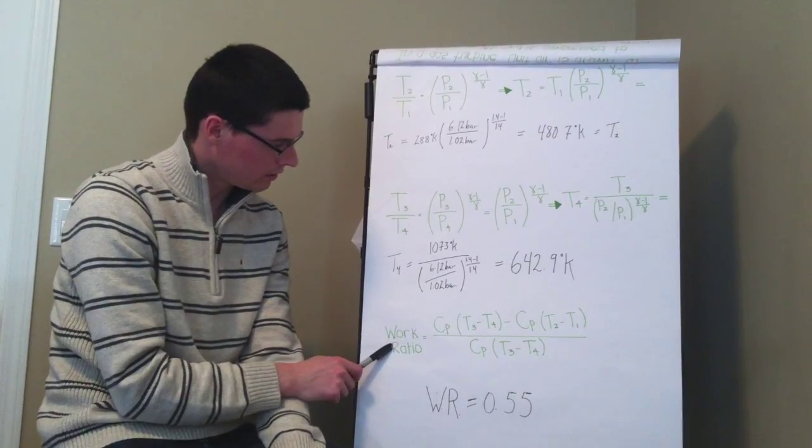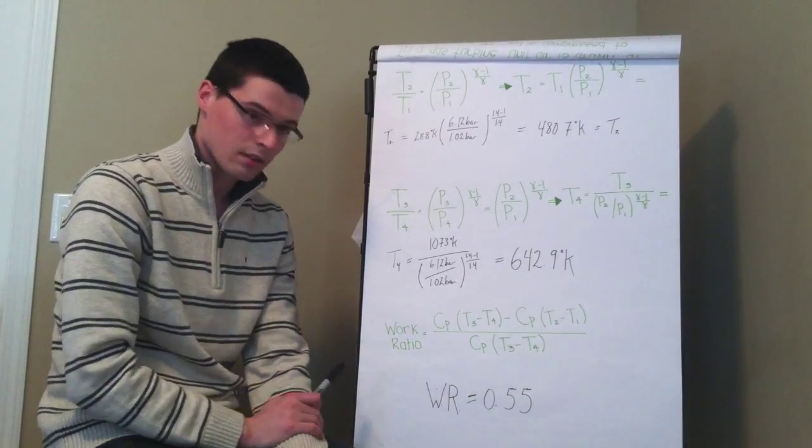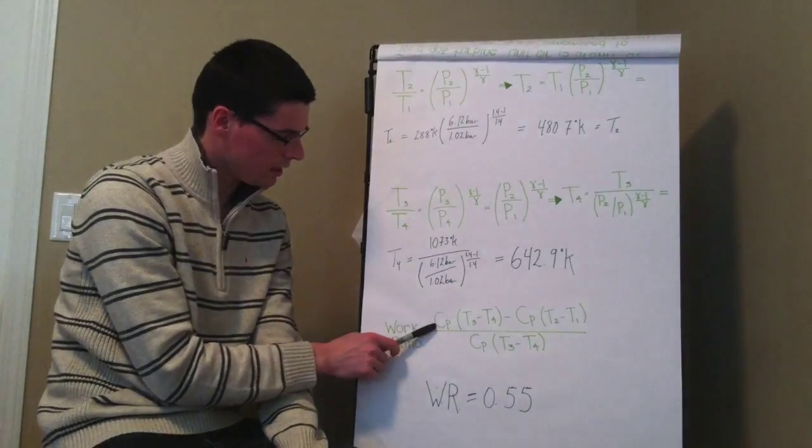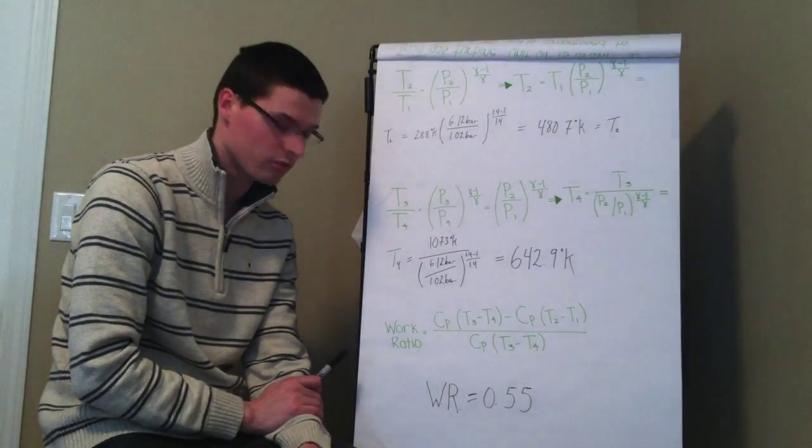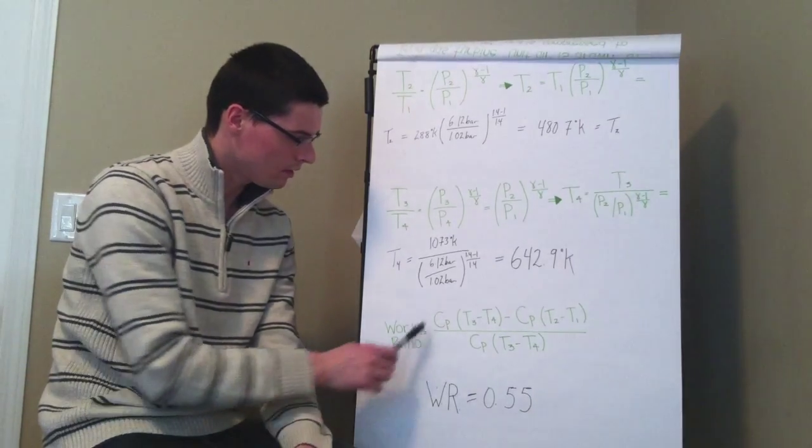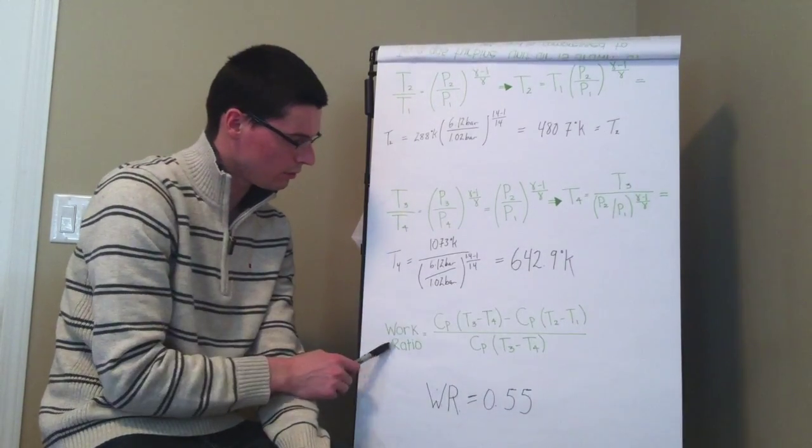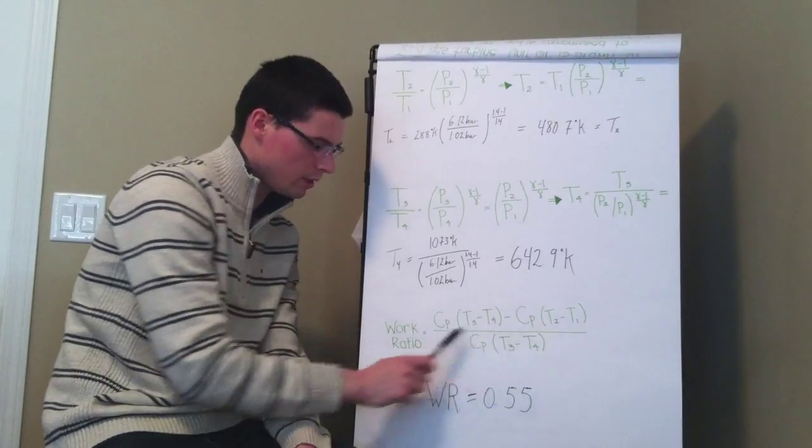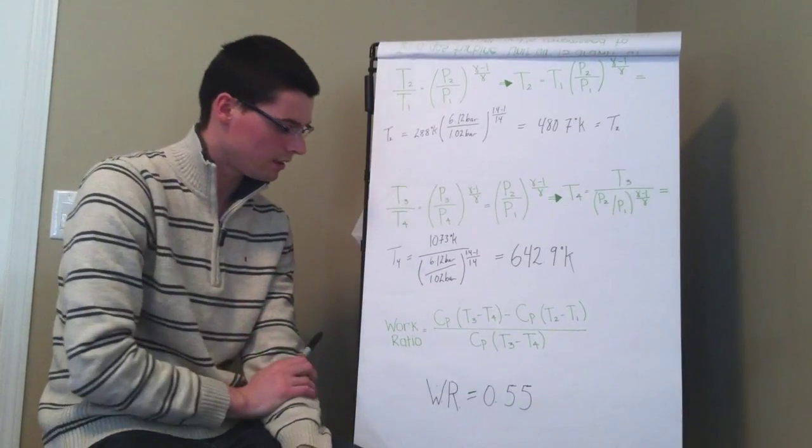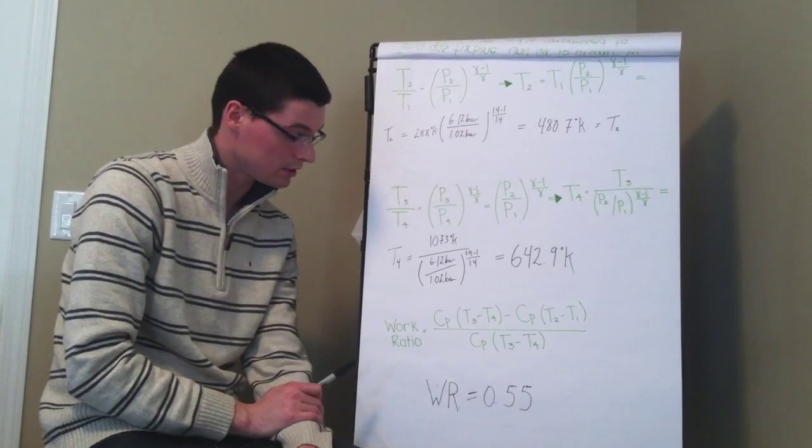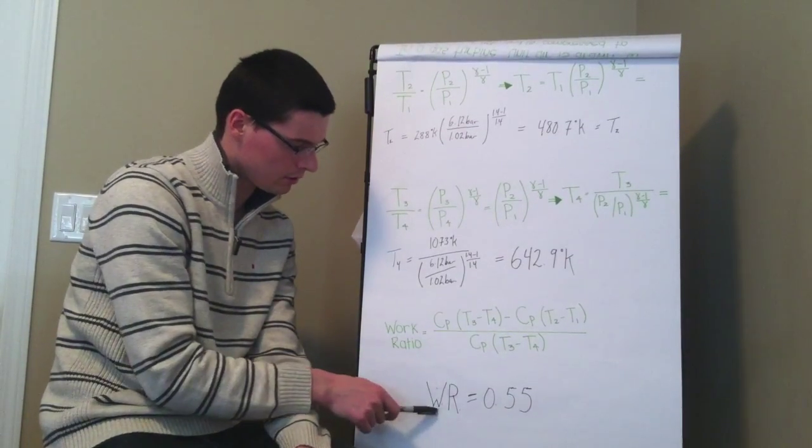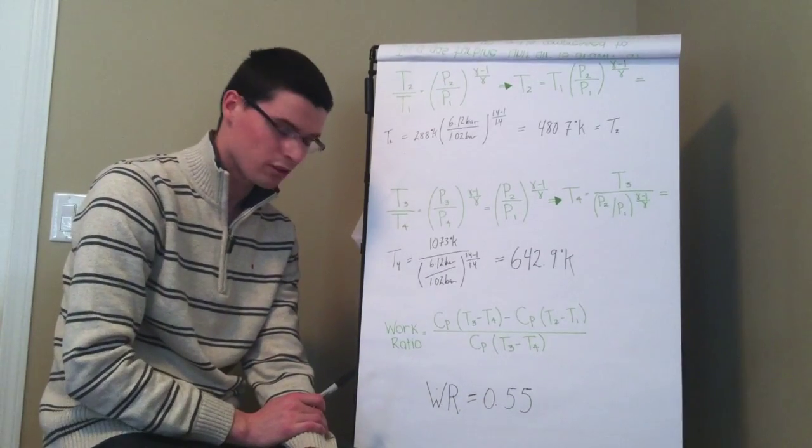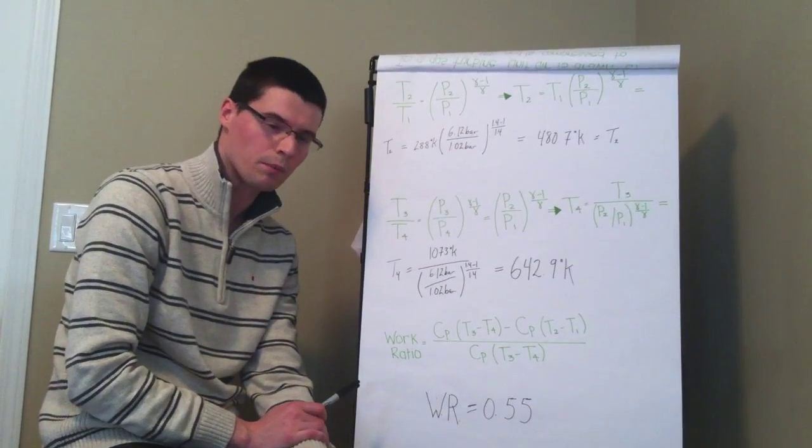So now we want to find the work ratio. What we're going to do is we're going to take our CP for air, which is given 1.005. And we're going to punch it into this general formula. We have all of the temperatures as we calculated here. So it just becomes number crunching more or less. And we can very easily see our work ratio coming out to 0.55, approximately.